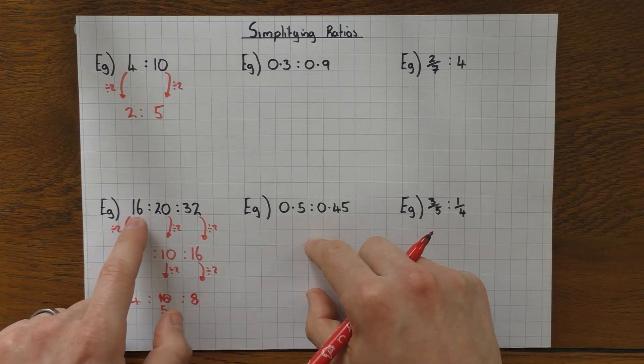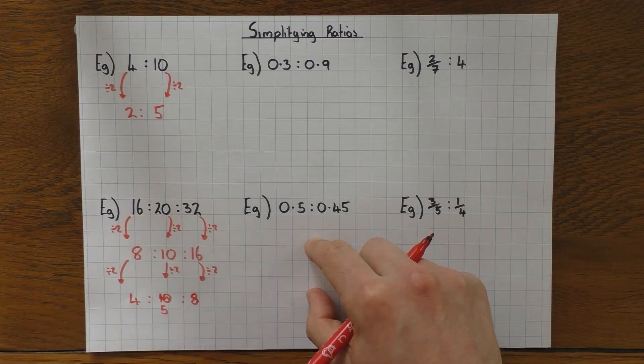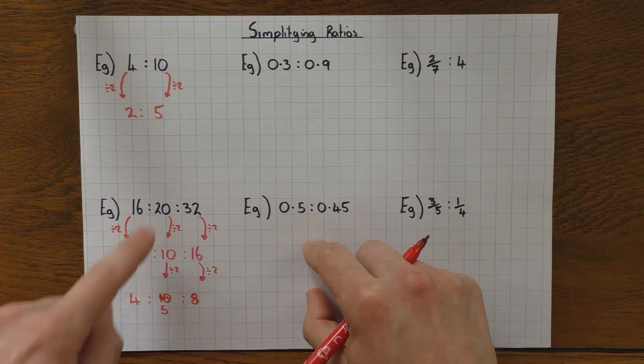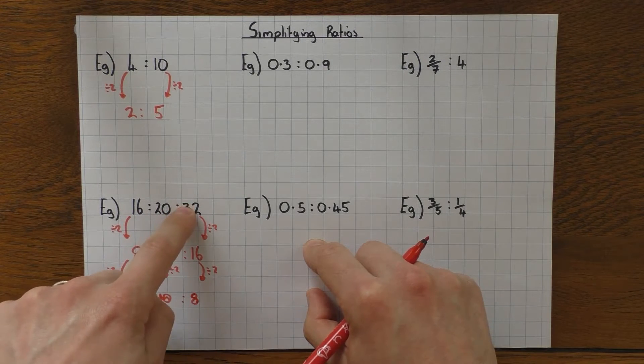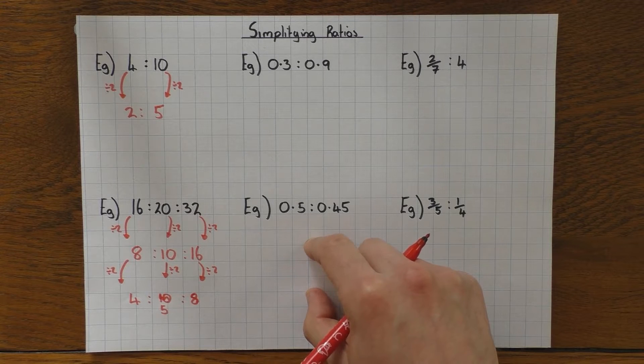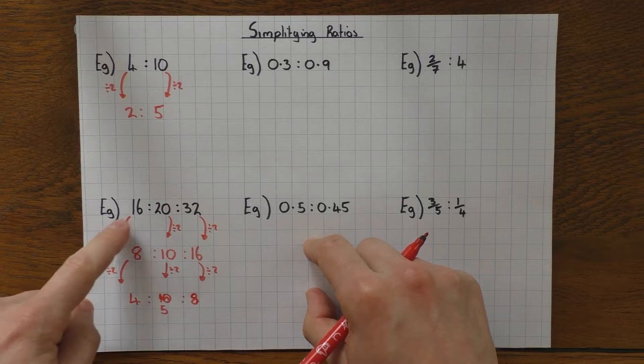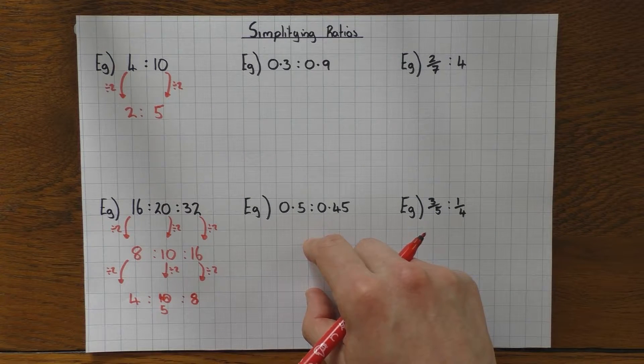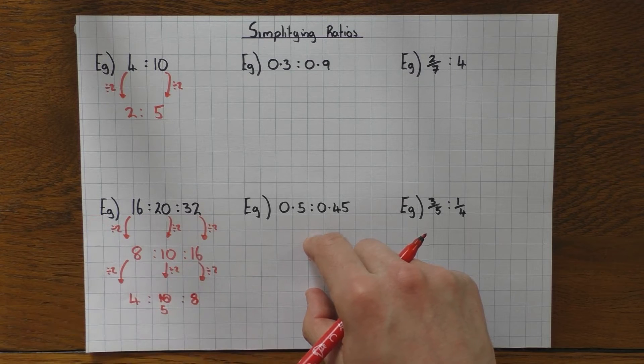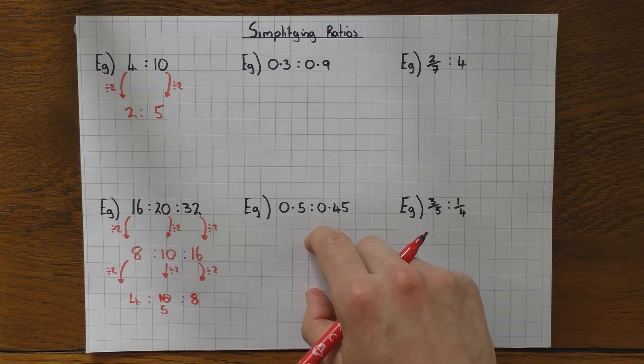And like I said, if you spot the highest common factor at the start is 4, 16 divided by 4 is 4, 20 divided by 4 is 5, and 32 divided by 4 is 8. So ideally use the highest common factor. But if you can't spot it, but you can spot a common factor, just do it in multiple steps. Just keep going until you can't go any more.